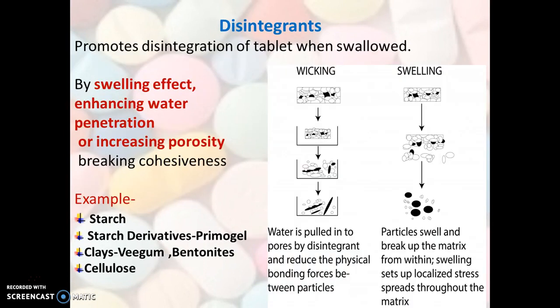Next is the very important excipient — disintegrants. For a tablet to dissolve, it should first disintegrate, that is, break into small fragments and then into granules. Disintegrants promote the disintegration of tablets when swallowed. The mechanism may involve a swelling effect, enhancing water penetration, or increasing porosity, which breaks the cohesiveness of the tablet.